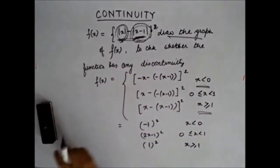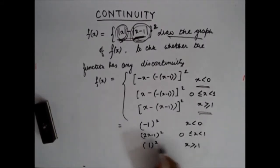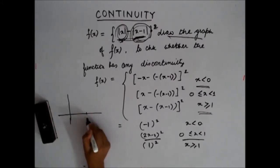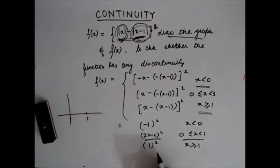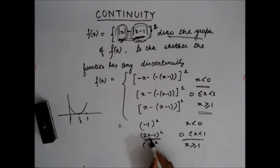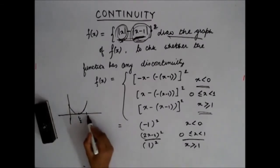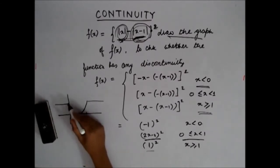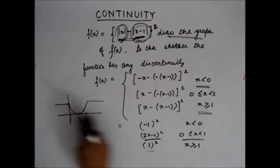Now the question asks to draw the graph of f(x). For x between 0 and 1, it is the parabola (2x − 1)², which has its root at x = 1/2. The parabola has value 1 at both x = 0 and x = 1. When x is greater than 1, the function equals the constant 1. When x is less than 0, it is also 1. So the graph is a parabola dipping to 0 at x = 1/2, joined by constant value 1 on both sides. From the graph, there is clearly no discontinuity; the function is continuous.